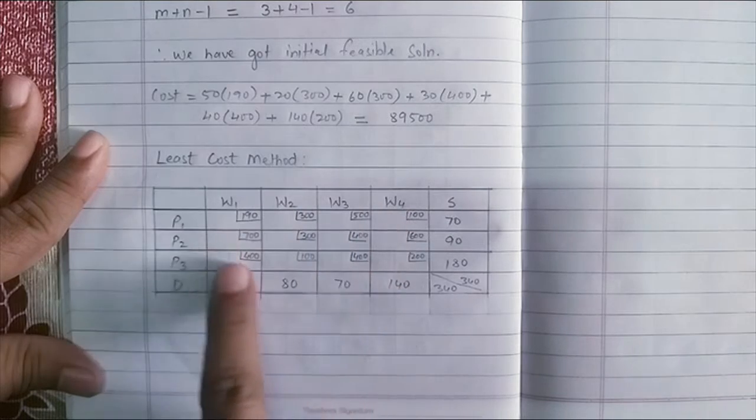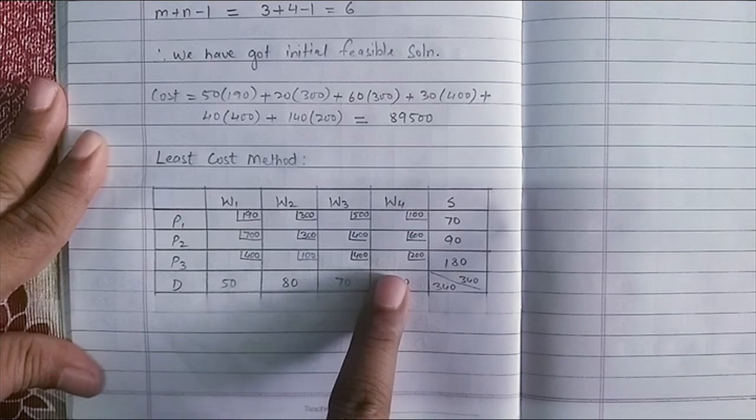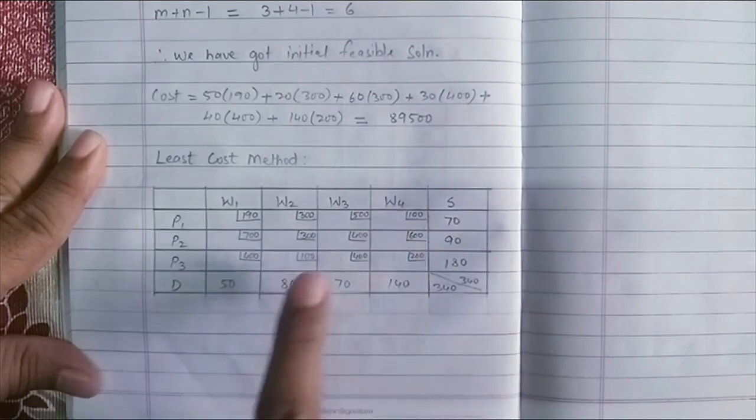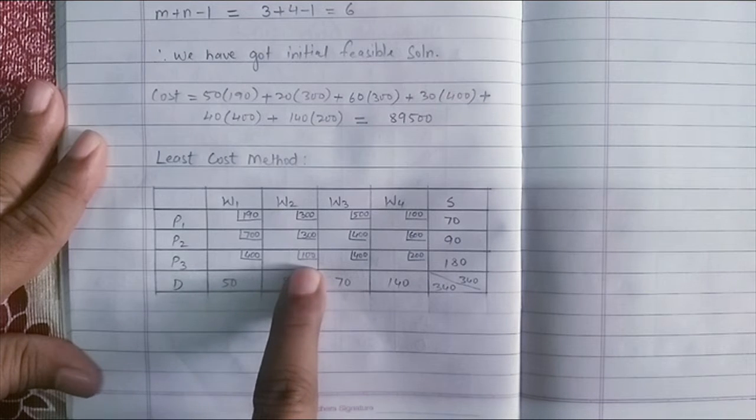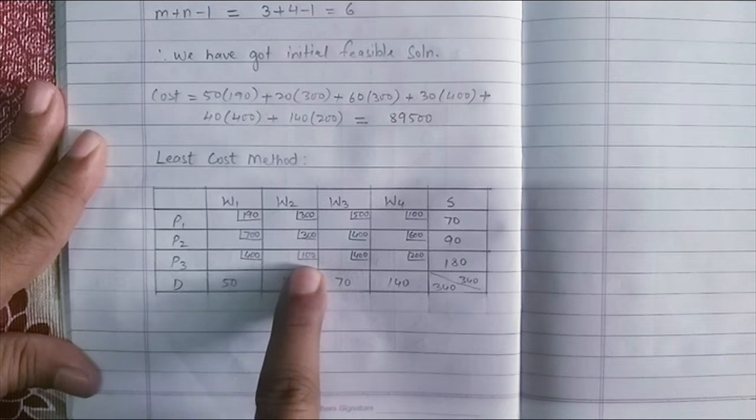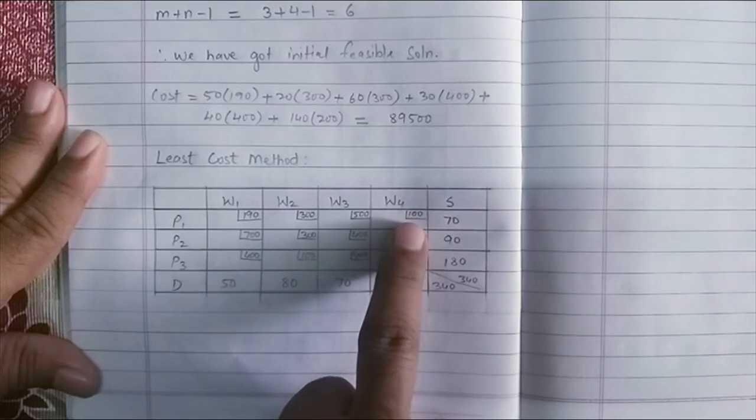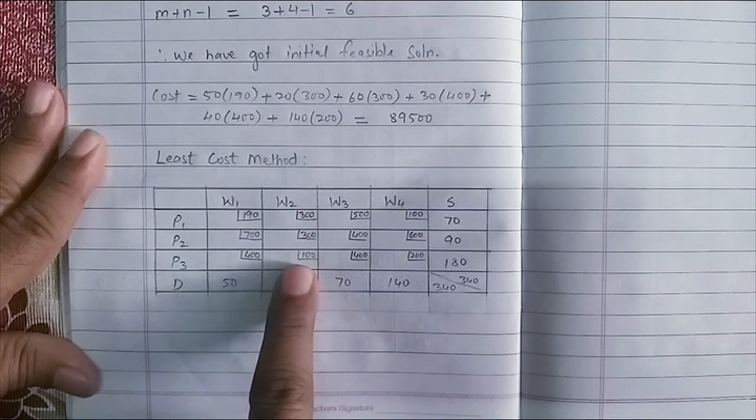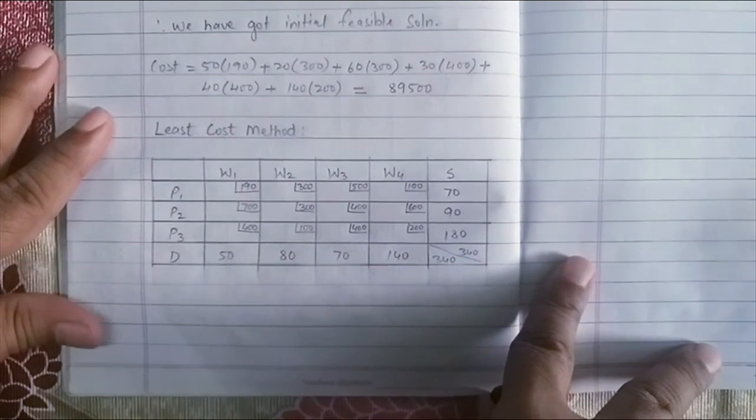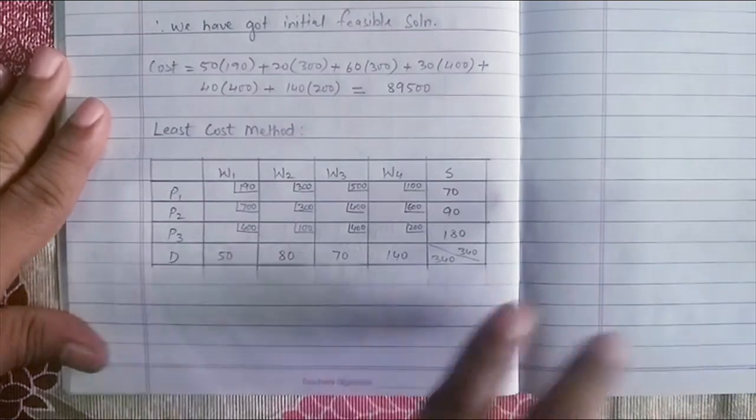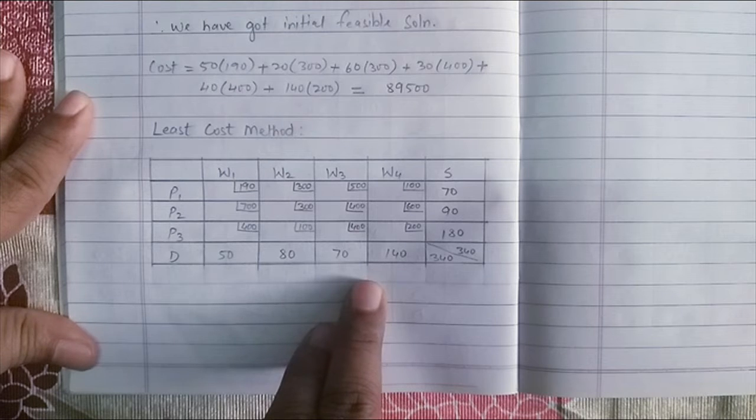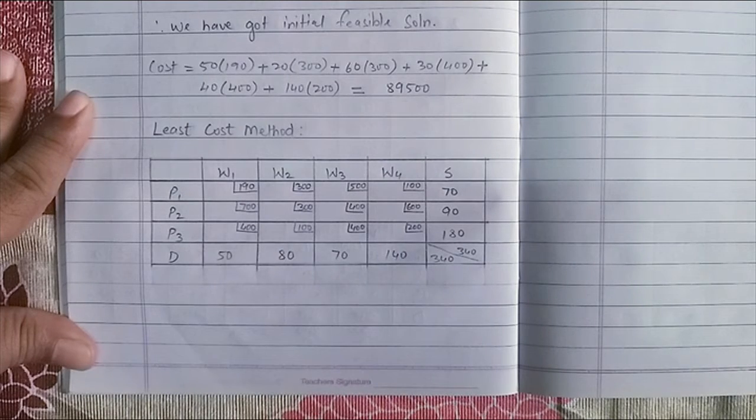To table given. If you observe it, the least cost is 100. Here it is 100. We also have another value which is same. So there is a tie between P1, W4, 100 here and P3, W2, 100 here.